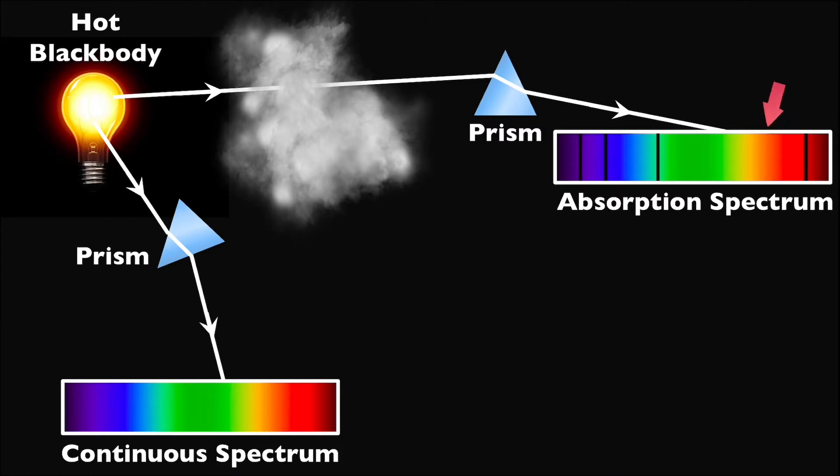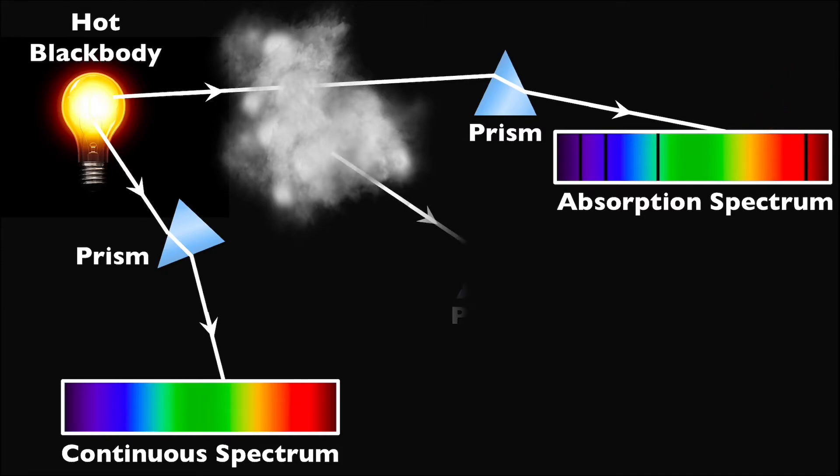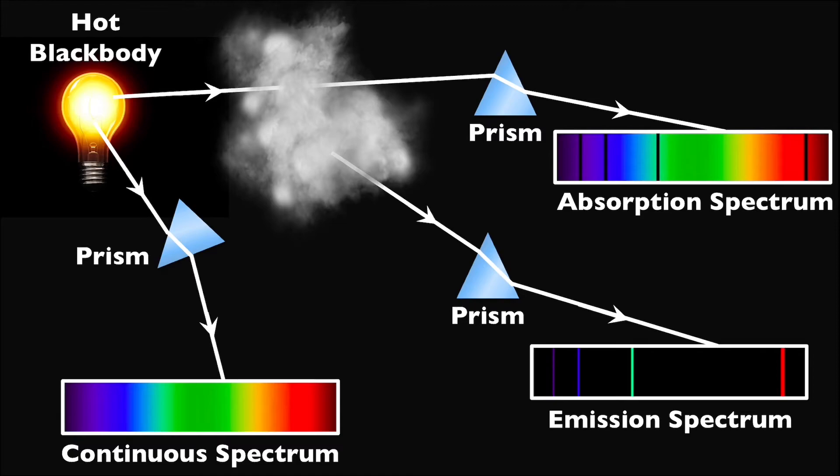Lastly, if we were to look at the light coming directly from the cool, low-density gas cloud instead of the hot black body or the hot black body through the low-density gas cloud, we would see the exact wavelengths that went missing before. This is what we would call an emission spectrum, where all that we see are the specific wavelengths that were absorbed in the previous case.